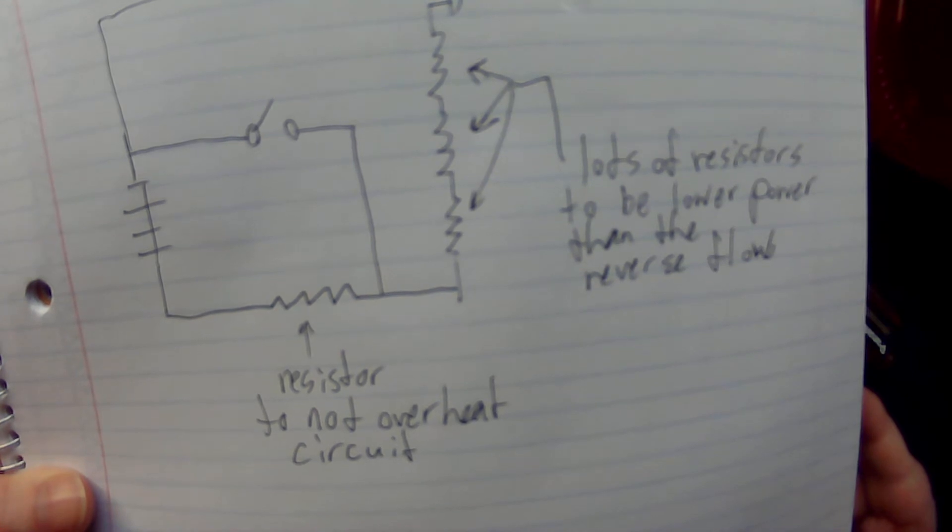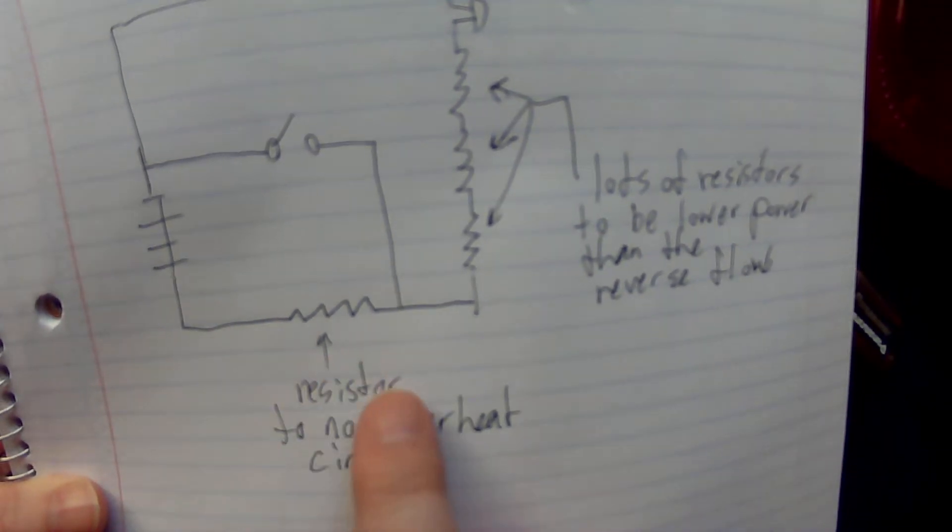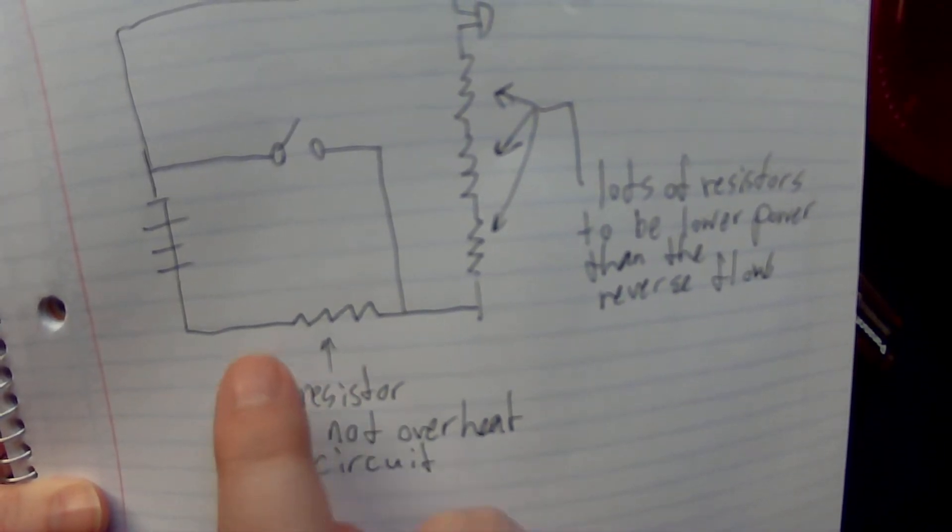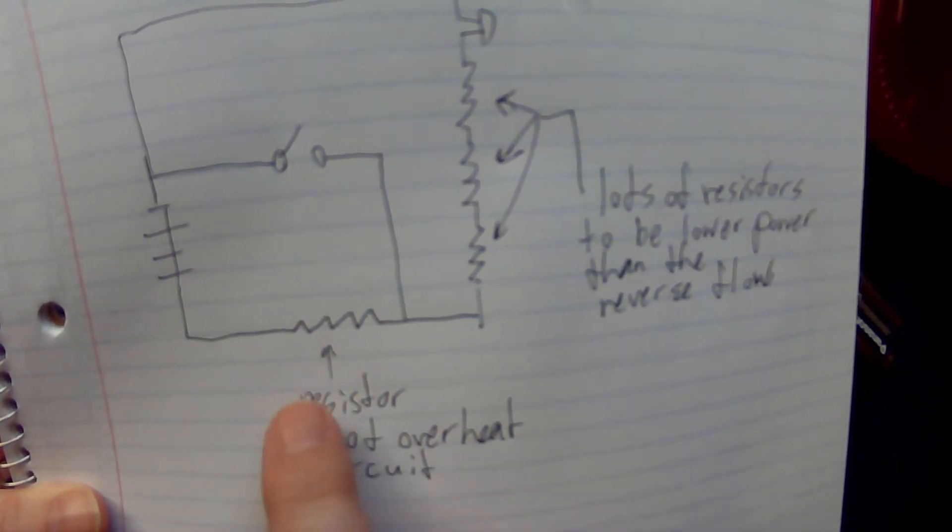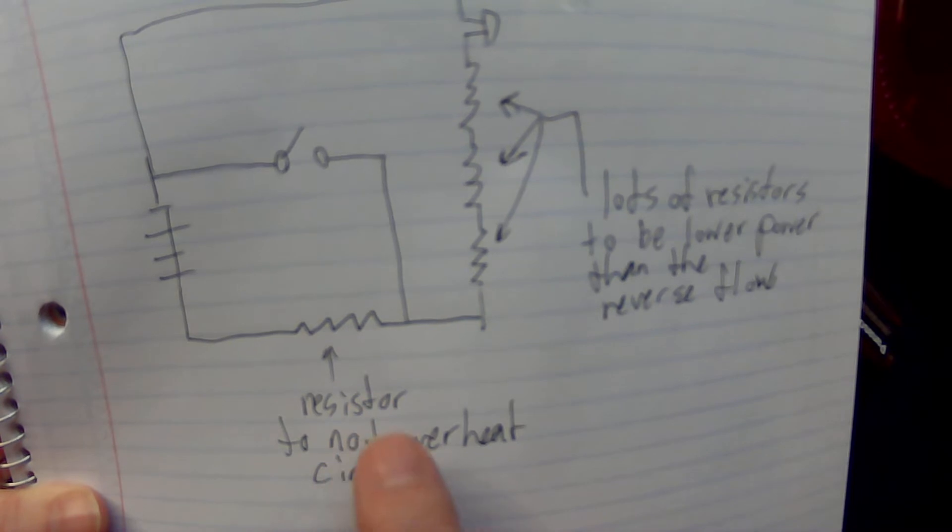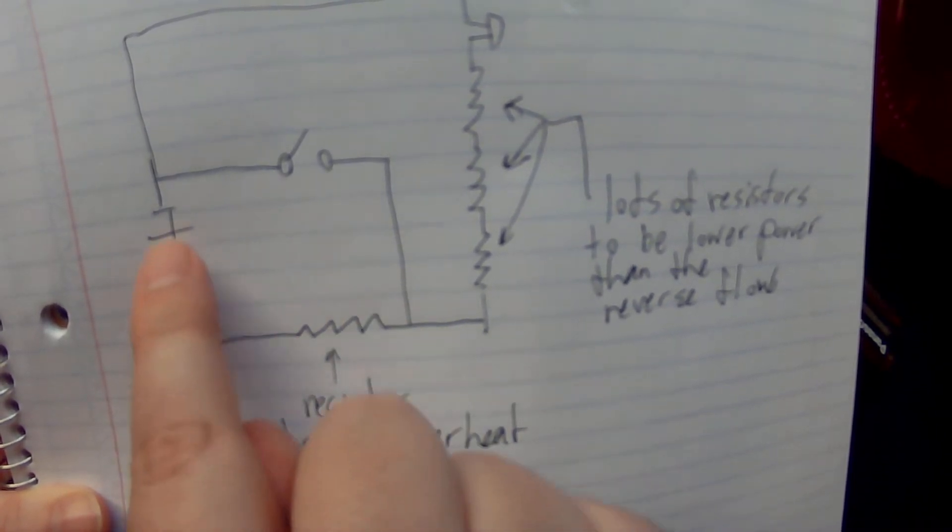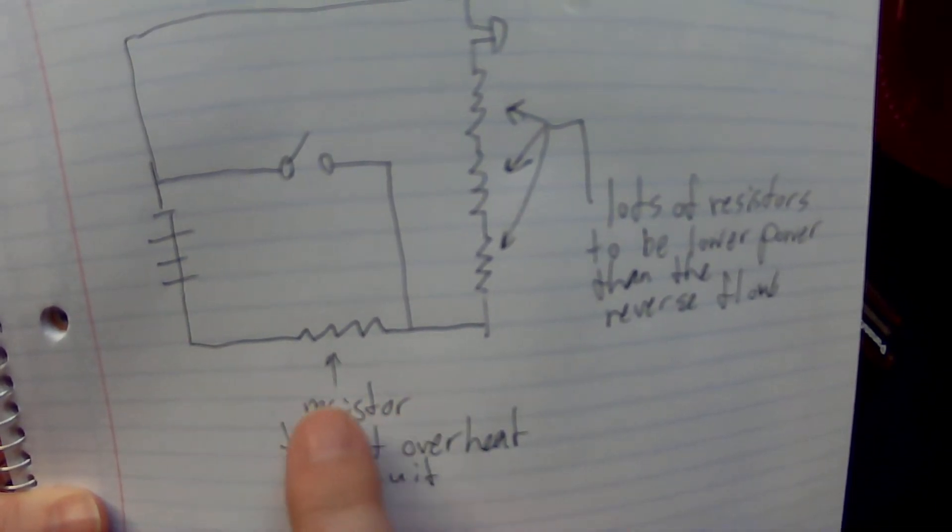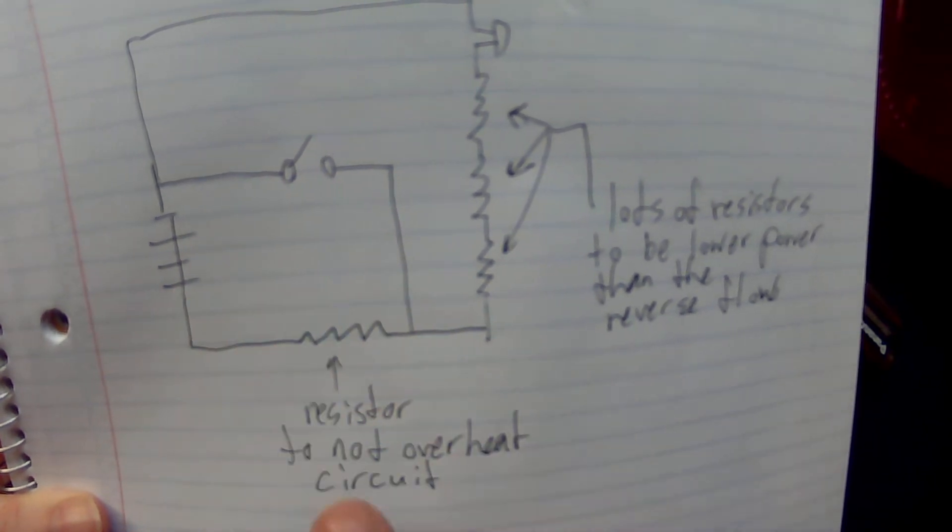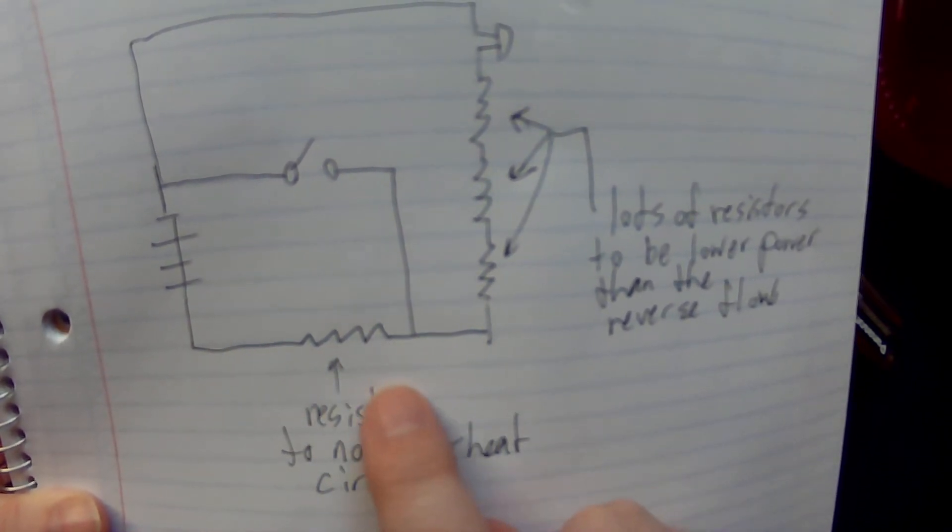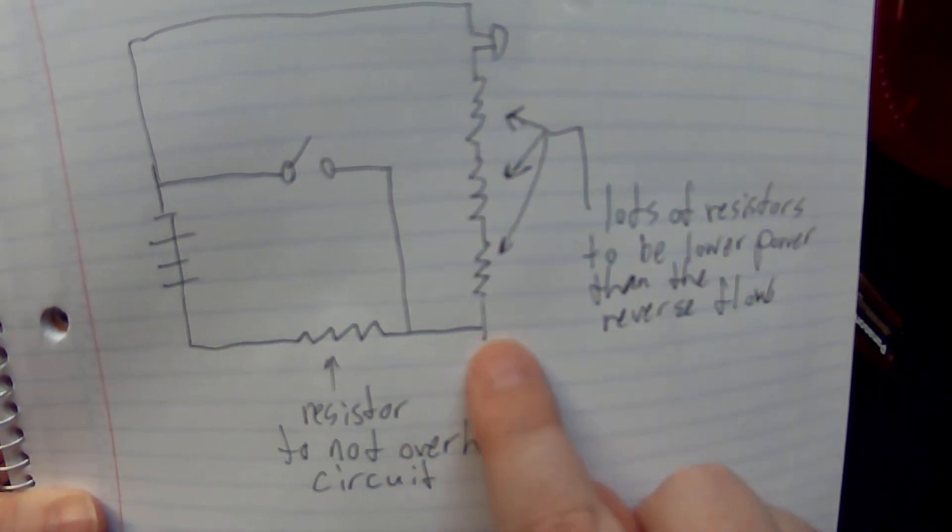This resistor you want to have so that this circuit doesn't overheat. You don't want the wires burning or anything, so you need to have this resistor here to slow down the battery consumption so that it doesn't overheat the battery or the wires. But it needs to be a lower amount of resistance than these resistors on this side.